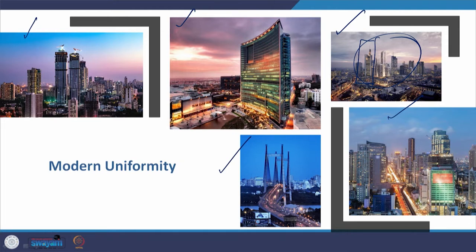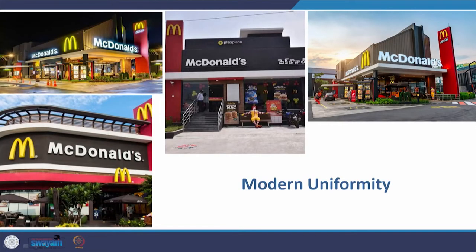That is modern uniformity. Even something as culturally iconic today as the big 'M' sign of McDonald's — it is so difficult to identify where these eateries are in which city of the world, all represented by the uniform architecture of McDonald's.